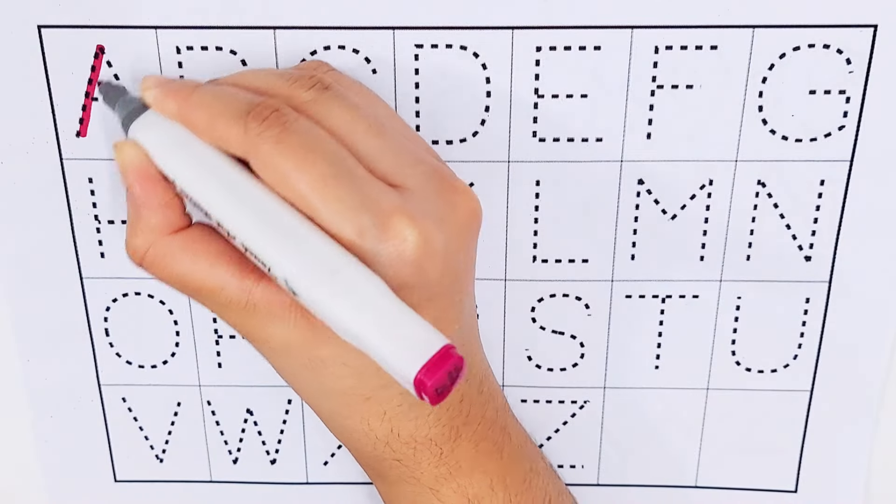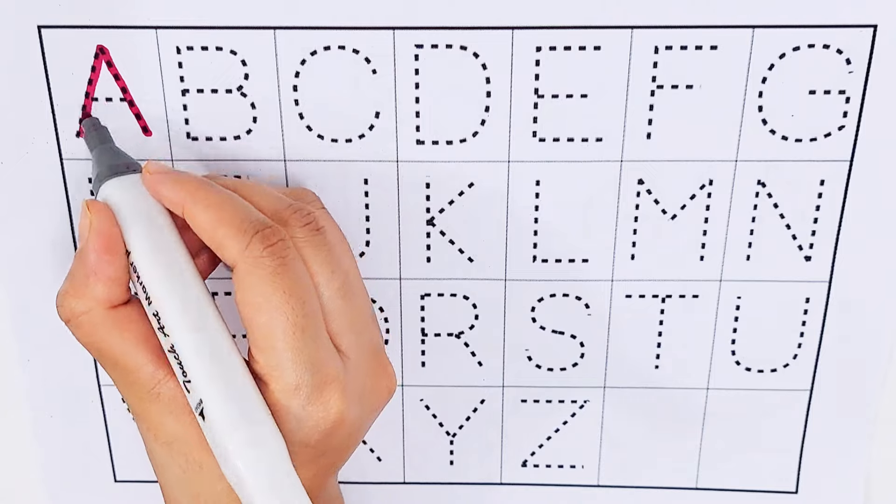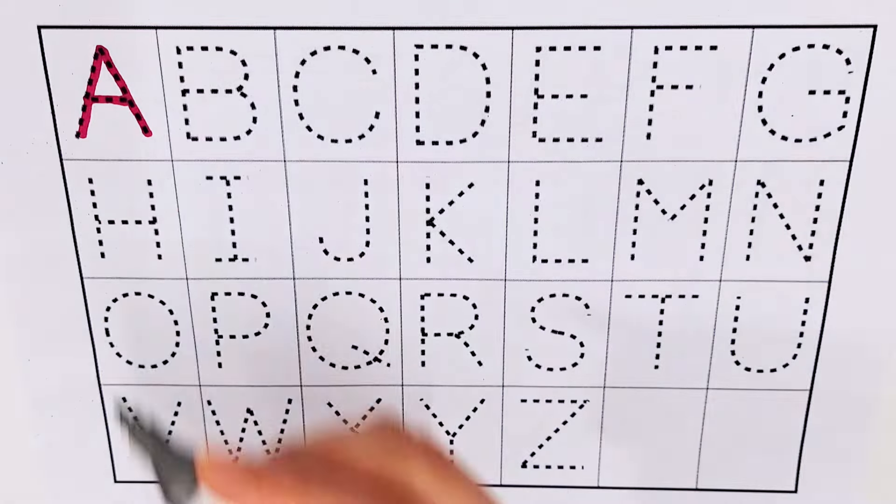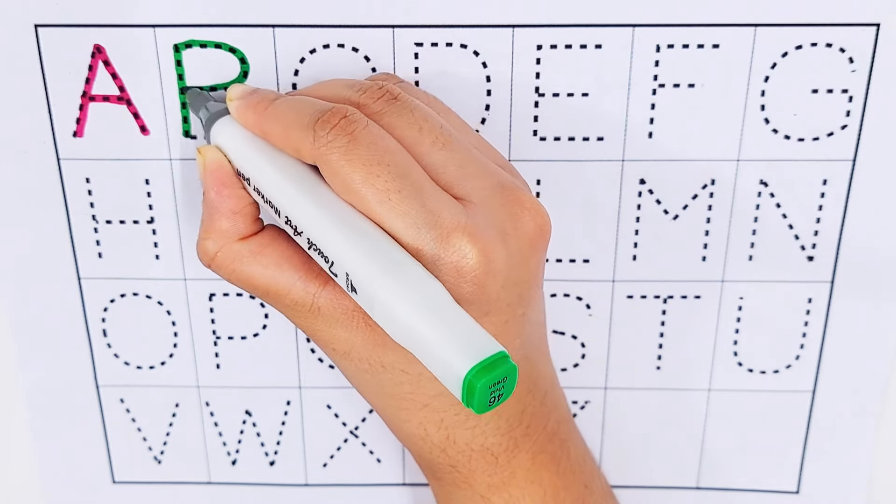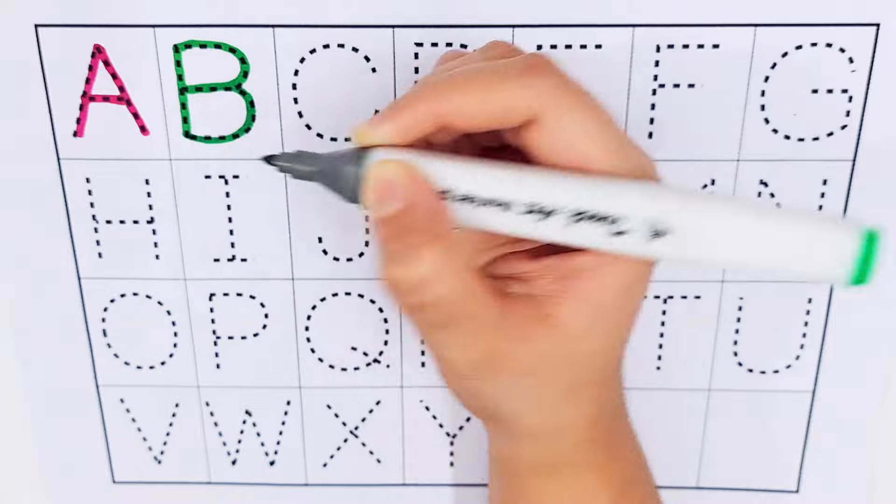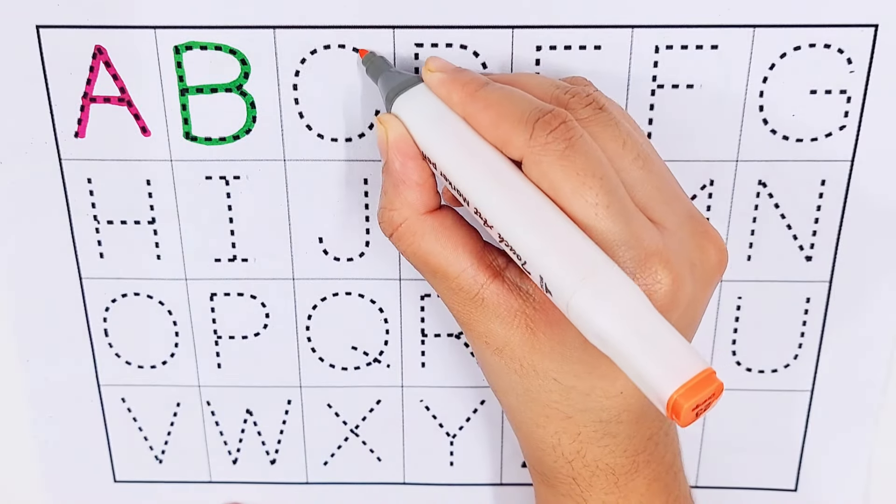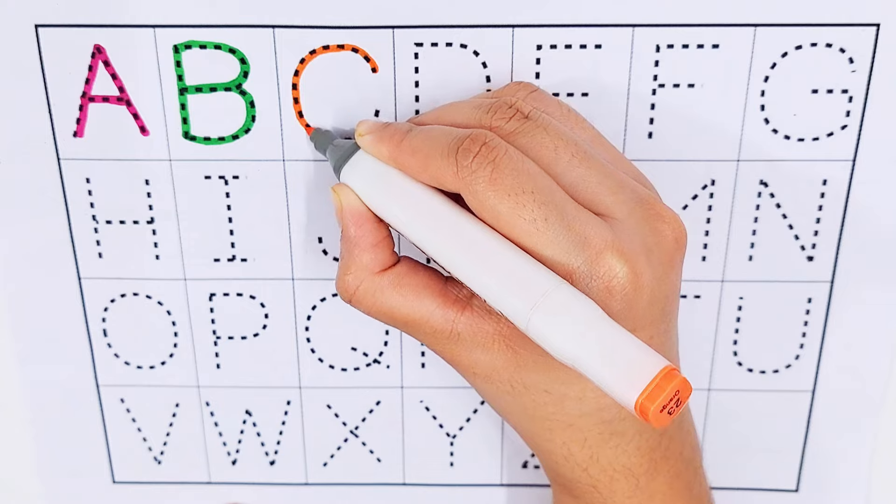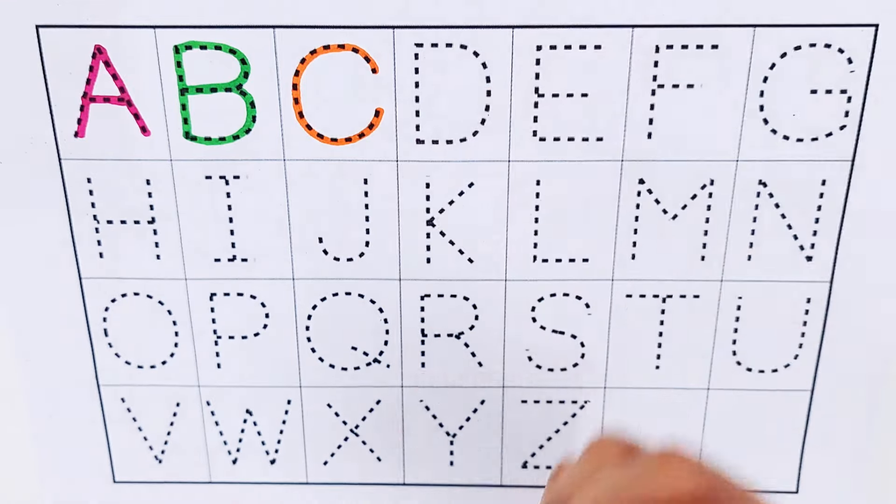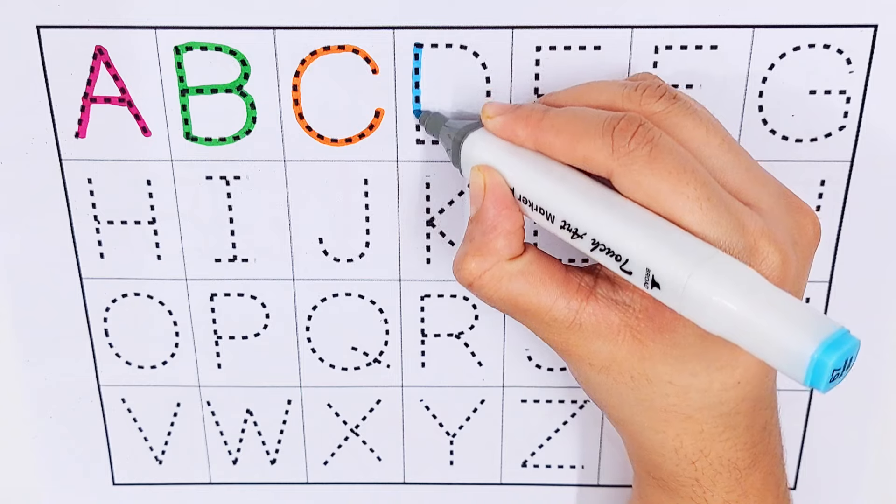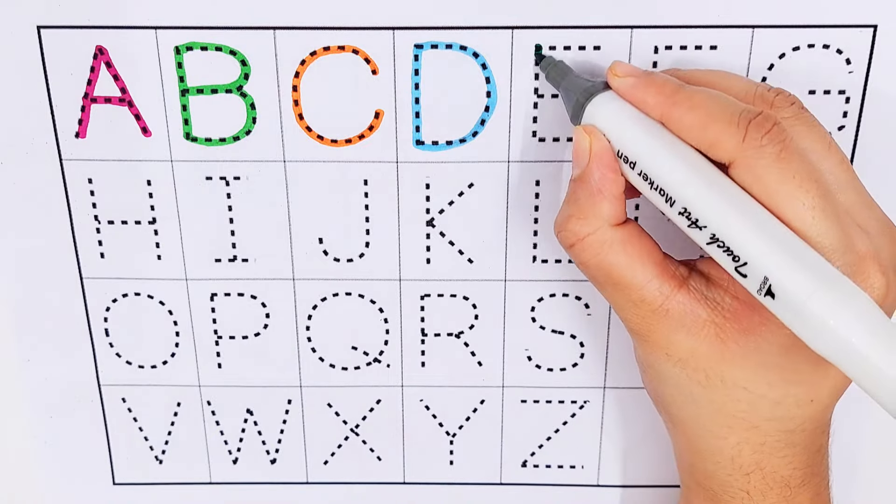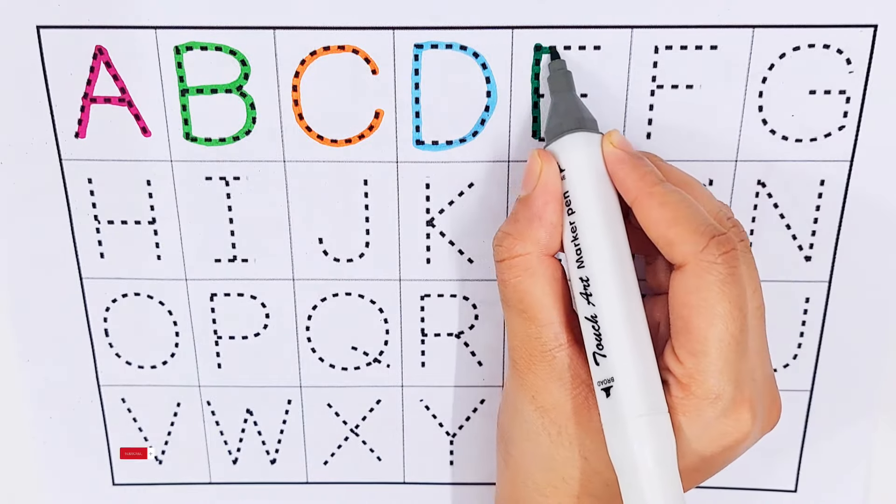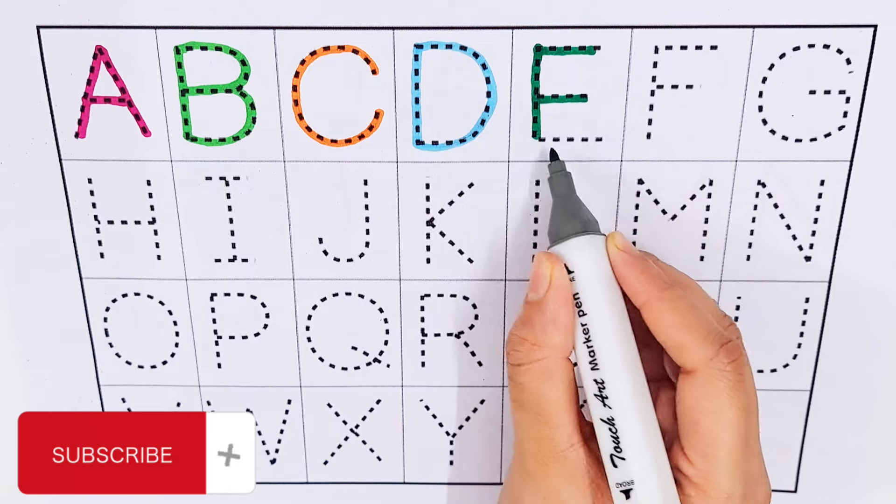A. A for aeroplane. B. B for banana. C. C for cow. D. D for doll. E. E for elephant.